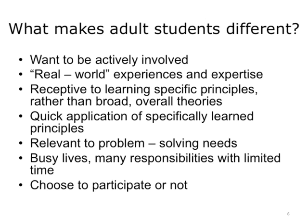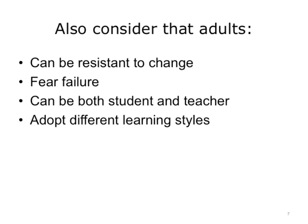But what makes adult learners different than children? Do we need to change the way we do our training when training adult students versus what you may have experienced back in school? Here are some of the characteristics of adult learners. Adults want to be actively involved in their learning, and they have a broad base of experience to bring to the classroom. Adults want to learn what is important to them and will want to apply that learning immediately in their job and life. Learning needs to be relevant and help them solve problems. Adults have busy lives, many responsibilities, and limited time. They can choose whether to participate or not, often resist change, fear failure, can be both learners and trainers, and have different learning styles.